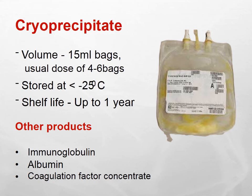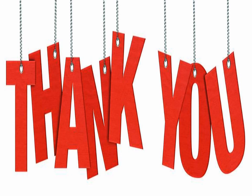Cryoprecipitate is also a blood transfusion product. The volume of the bag is 15 ml and we usually transfer four to six bags. It is stored at minus 25 degrees centigrade and the shelf life of cryoprecipitate is up to one year. Other blood products include immunoglobulin, albumin, and coagulation factor concentrates. Thank you so much — I hope you understand a little about blood bank. This is for guidance, and we will visit the blood bank when you come to the college and discuss in detail. Thank you.